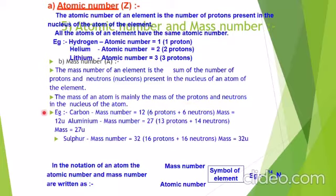For most purposes, atomic mass is taken as equal to mass number. The mass of an atom is mainly the mass of protons and neutrons in the nucleus. Carbon has mass number 12 — it has six protons and six neutrons, and adding them gives 12 u. The unit 'u' stands for unified mass, which replaced amu (atomic mass unit). Unified mass is the combined mass of all constituents.